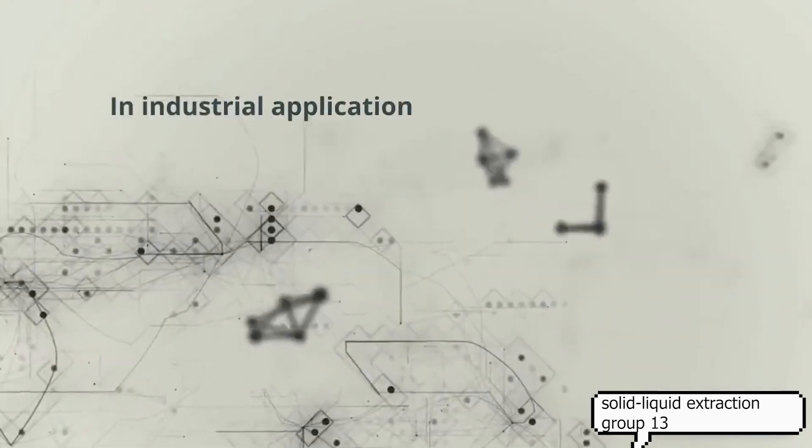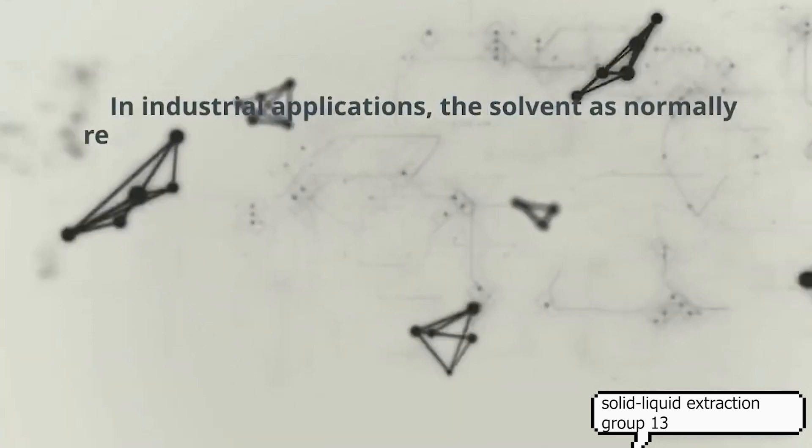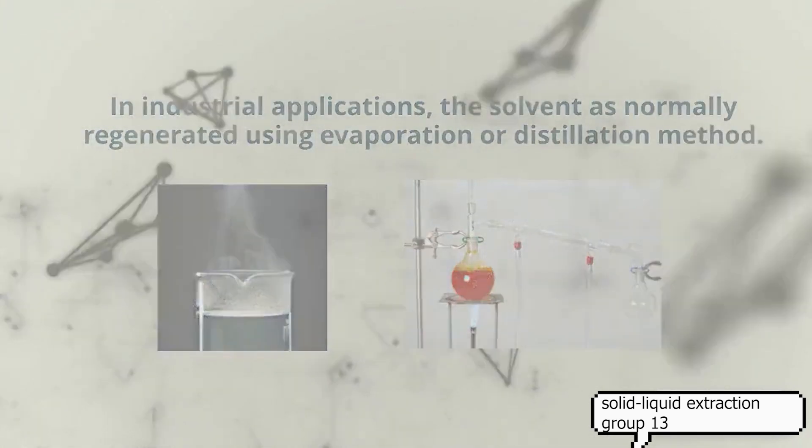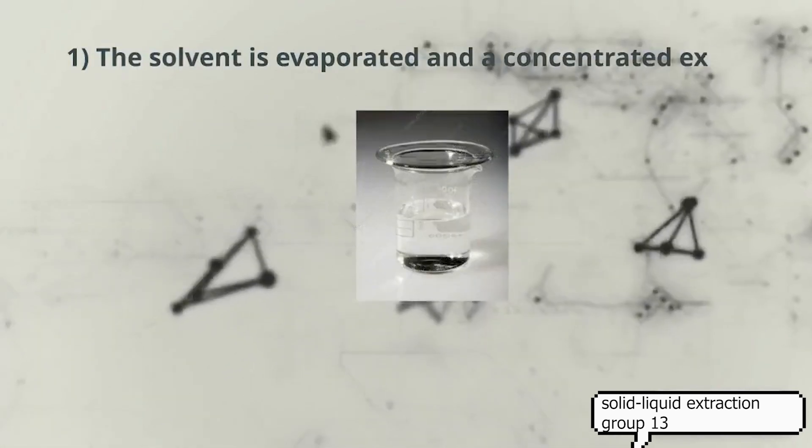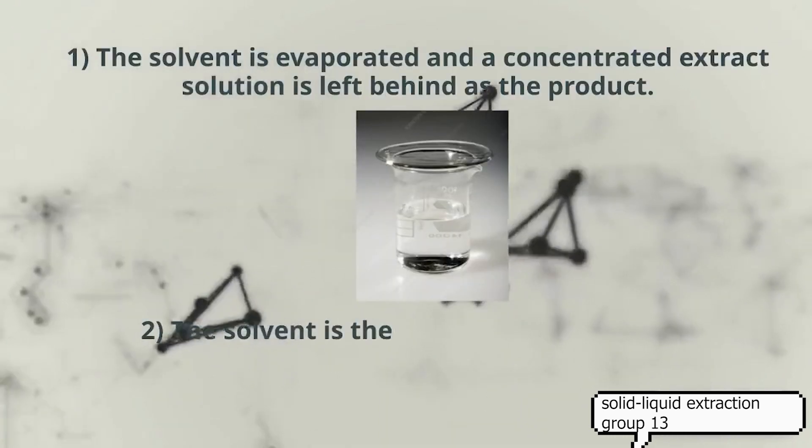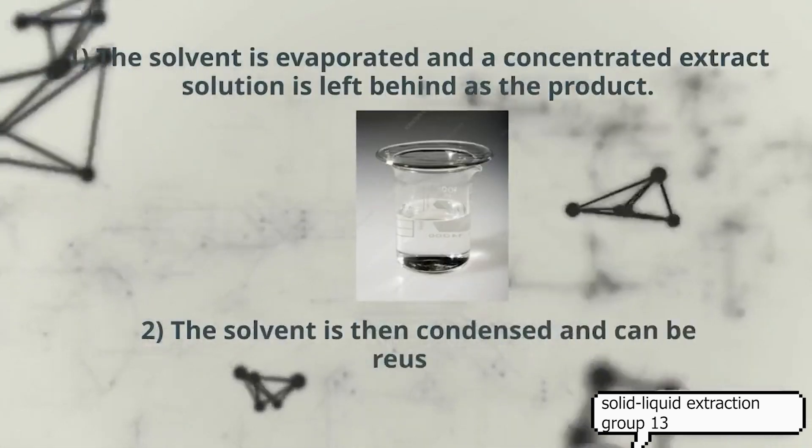So, we will go into industrial examples. In industrial applications, the solvent is normally regenerated using evaporation or distillation method. The solvent is evaporated, and a concentrated extract solution is left behind as the product. The solvent is then condensed and can be reused.